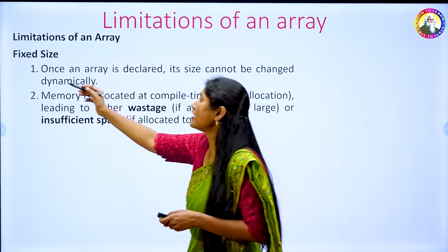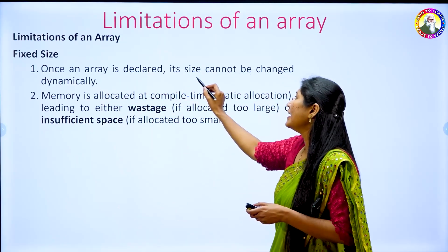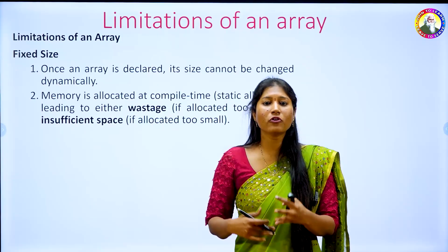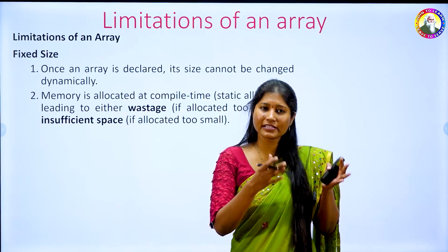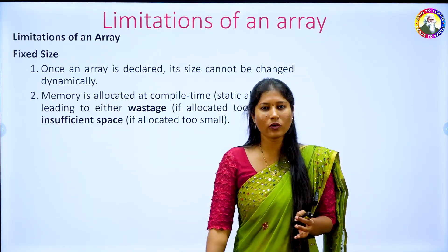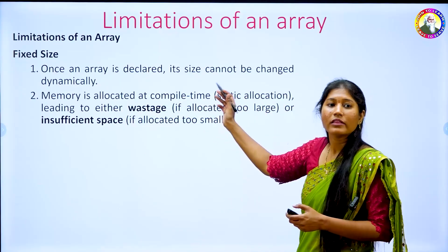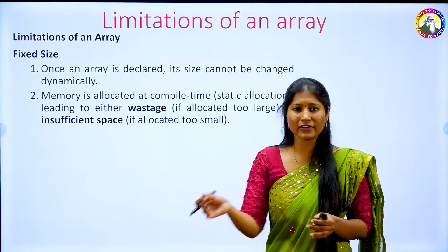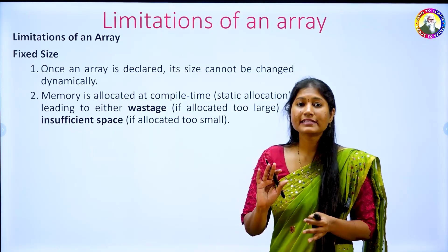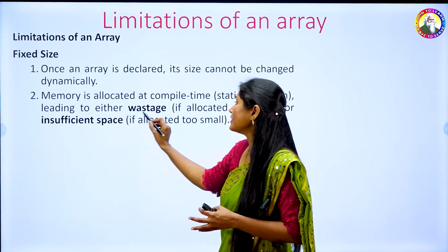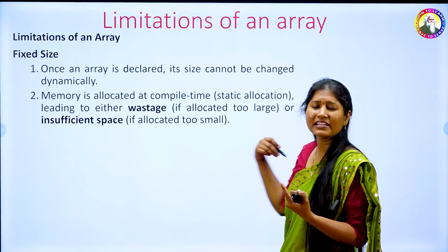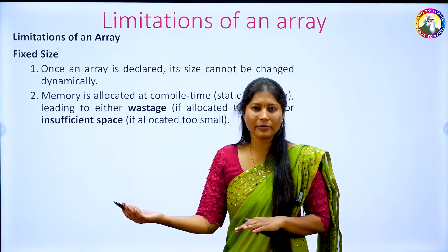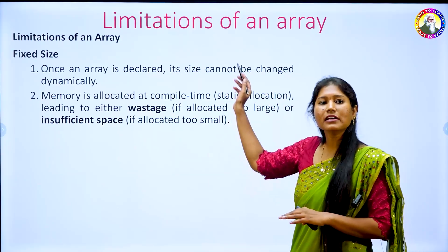The first limitation of an array is fixed size. Once an array is declared, its size cannot be changed dynamically. If I declare a[5], I can enter only up to 5 elements. If I want to enter a 6th element, it is not possible. An array is a fixed size element — it is a static memory allocation. I cannot change it whenever I require it. Memory is allocated at compile time, which is called static memory allocation. This leads to either wastage — if allocated too large — or insufficient space if too small.